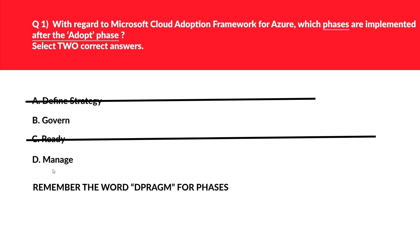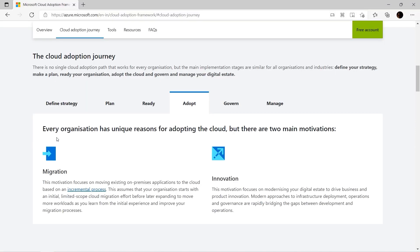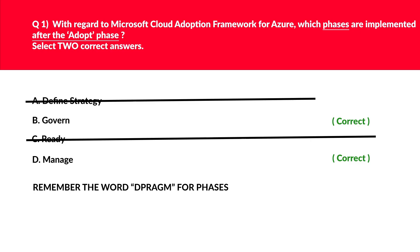Option D is Manage, and it's the last letter — Manage will definitely fall after Adopt. So we got our two answers. Before locking, if you look at the official documentation, we have these phases in this order. We'll log B and D as the correct answer.